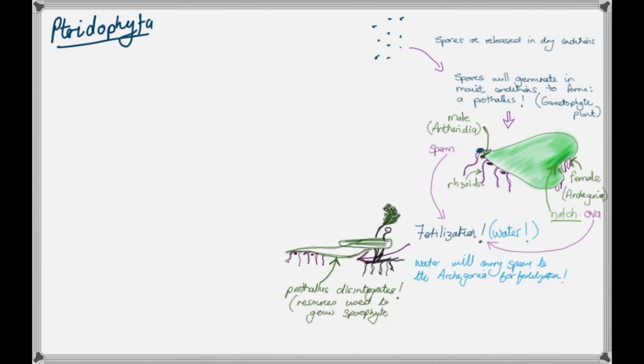During this whole process, the prothalus is actually disintegrated to provide resources to the new sporophyte plant that starts to grow after fertilization has taken place. Eventually the prothalus will disintegrate completely and we will be left with the sporophyte plant.